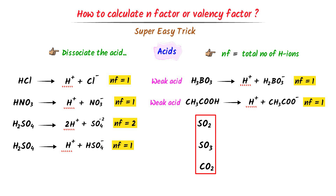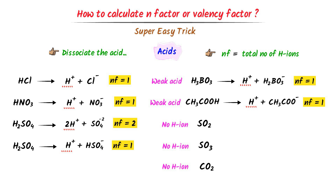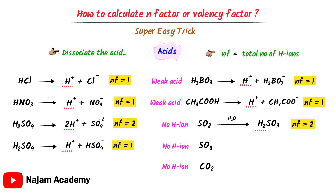In case of compounds that have no hydrogen ions, we will always add water to them. For example, I add water to sulfur dioxide and get H2SO3. We know that when H2SO3 dissociates, it gives two hydrogen ions. These two hydrogen ions mean that the n-factor of sulfur dioxide is 2.